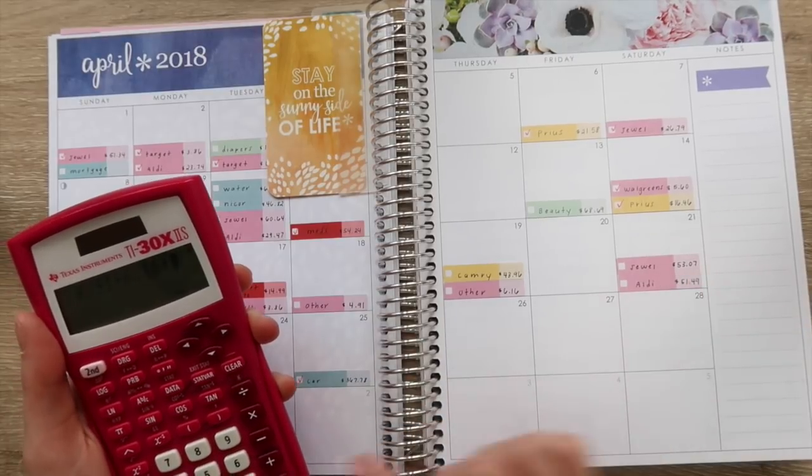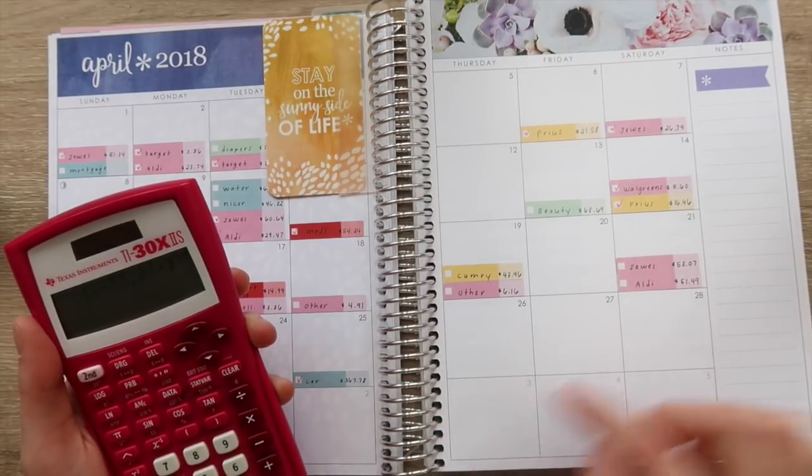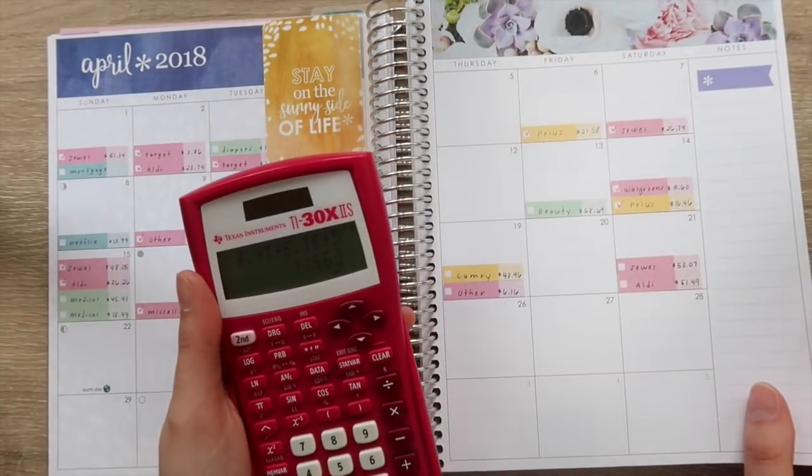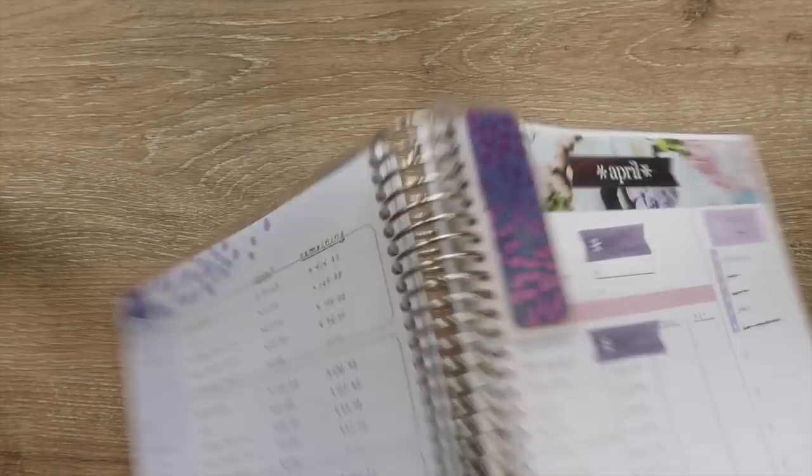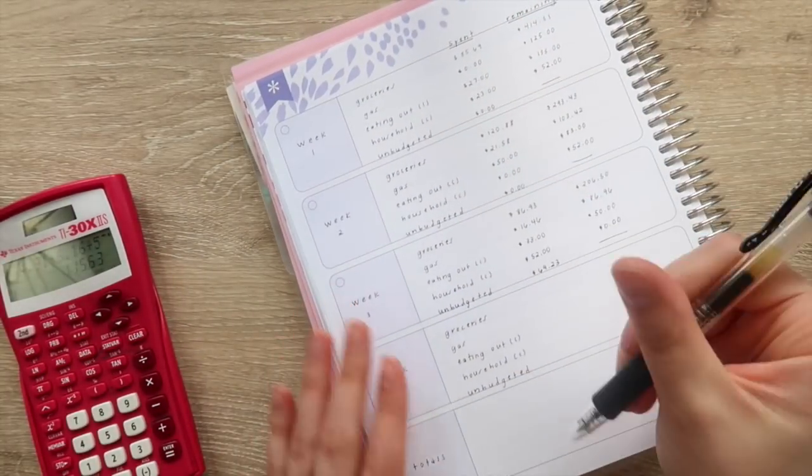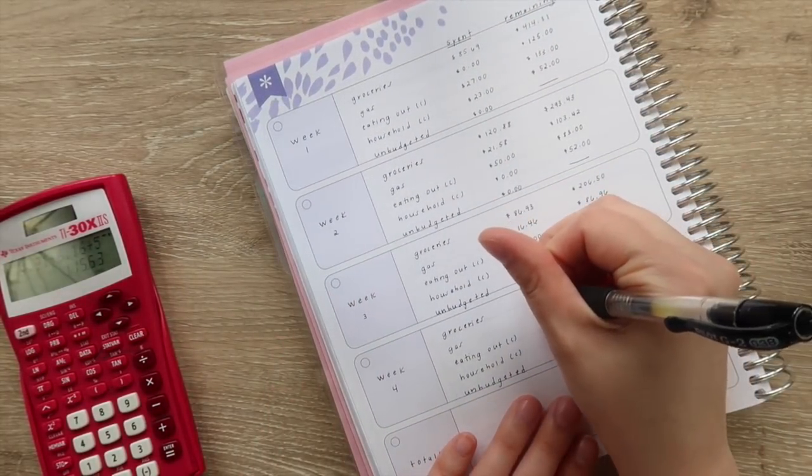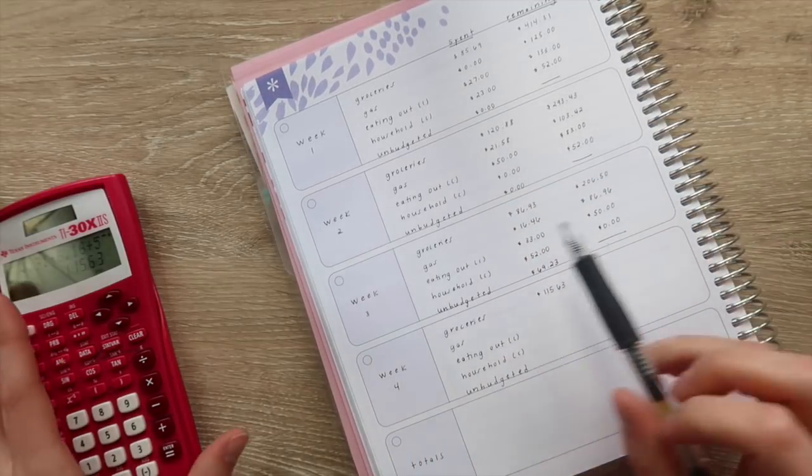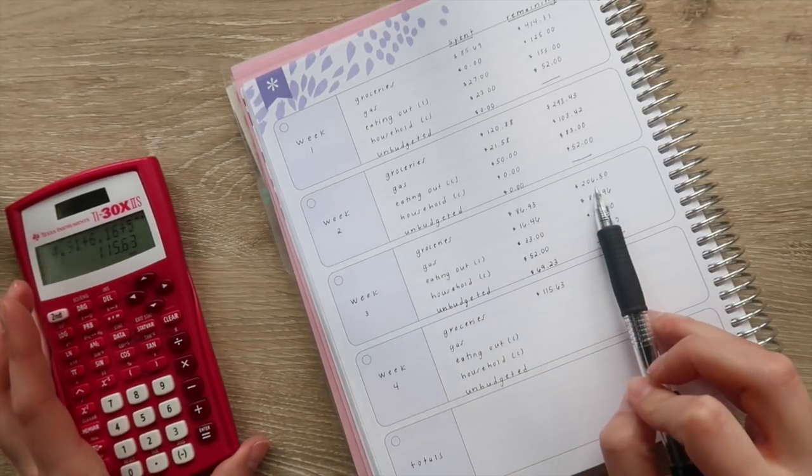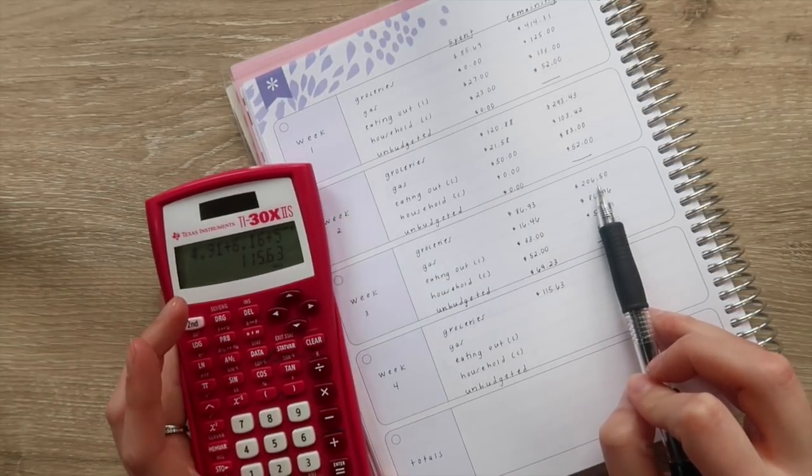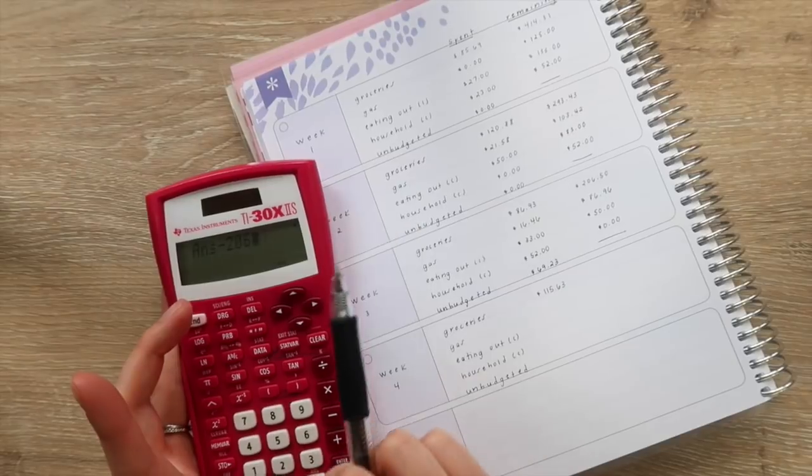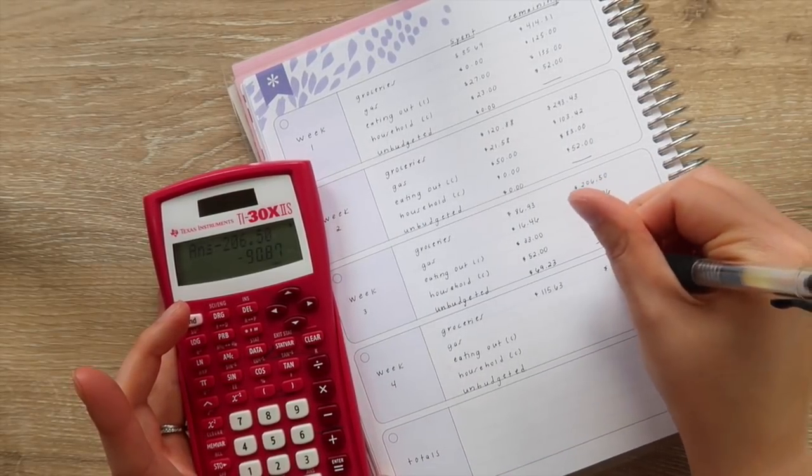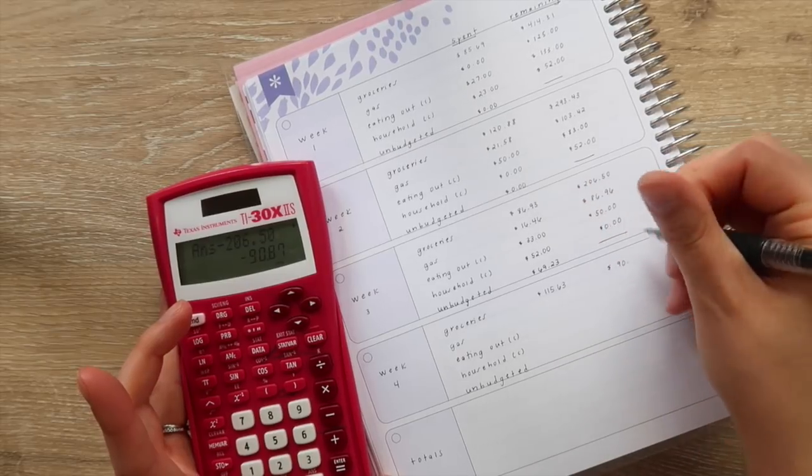Jewel for $53.07 and Aldi $51.49. That gives us a total of $115.63 for groceries. Last week we ended with the remaining of $206.50, so we have $90.87 remaining for the last week in April.